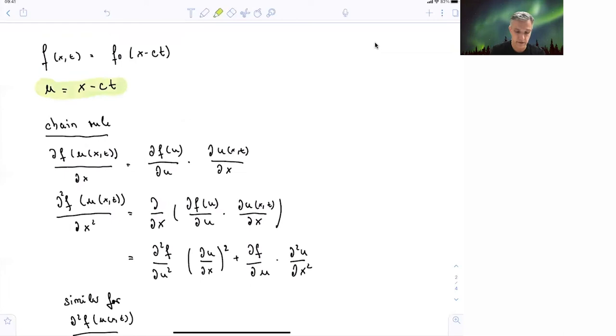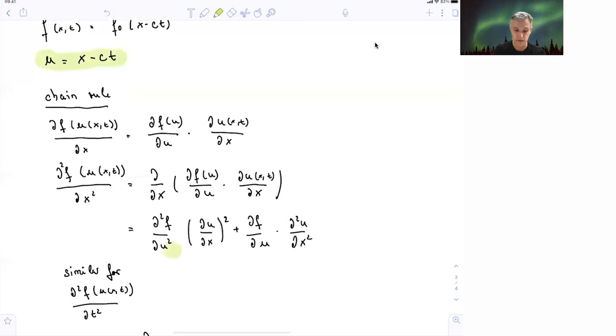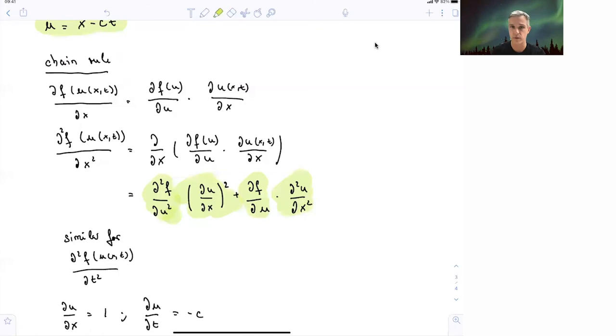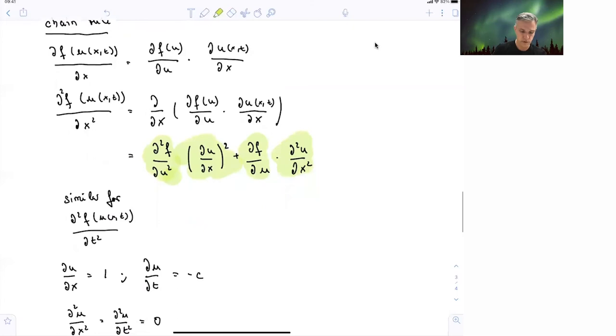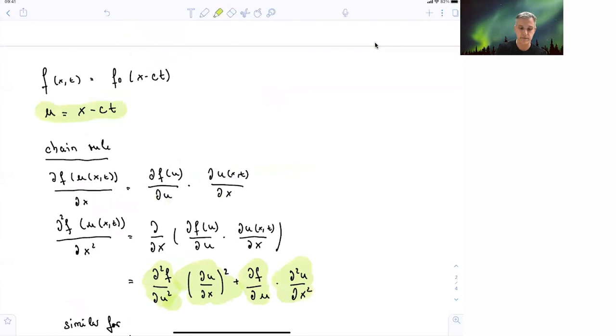u is equal x minus ct. This makes our function a function of u, which is itself a function of x and t. So if I build the derivative with x, I have df of u, du times du dx. So if I build the second derivative, there's a product here I have to take care of. So I find that the second derivative of f of u times du dx squared. And then I have to add df du times second derivative of u. This follows very similar for the derivative of t. And then I can investigate what we find. So my du dx is equal to 1, right?